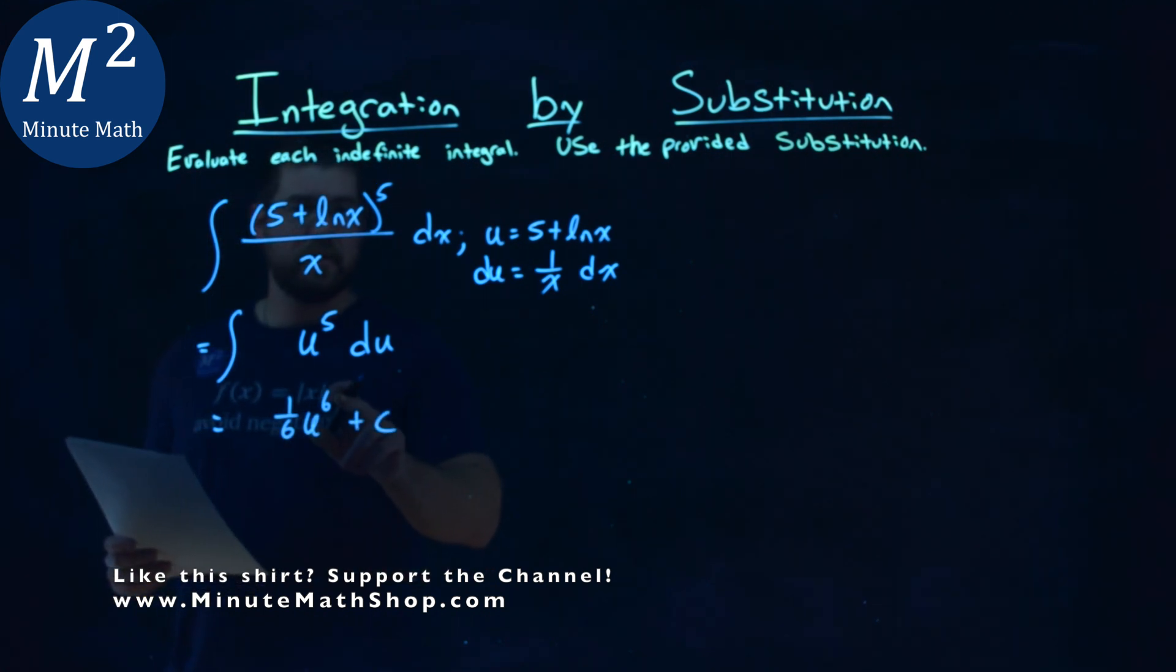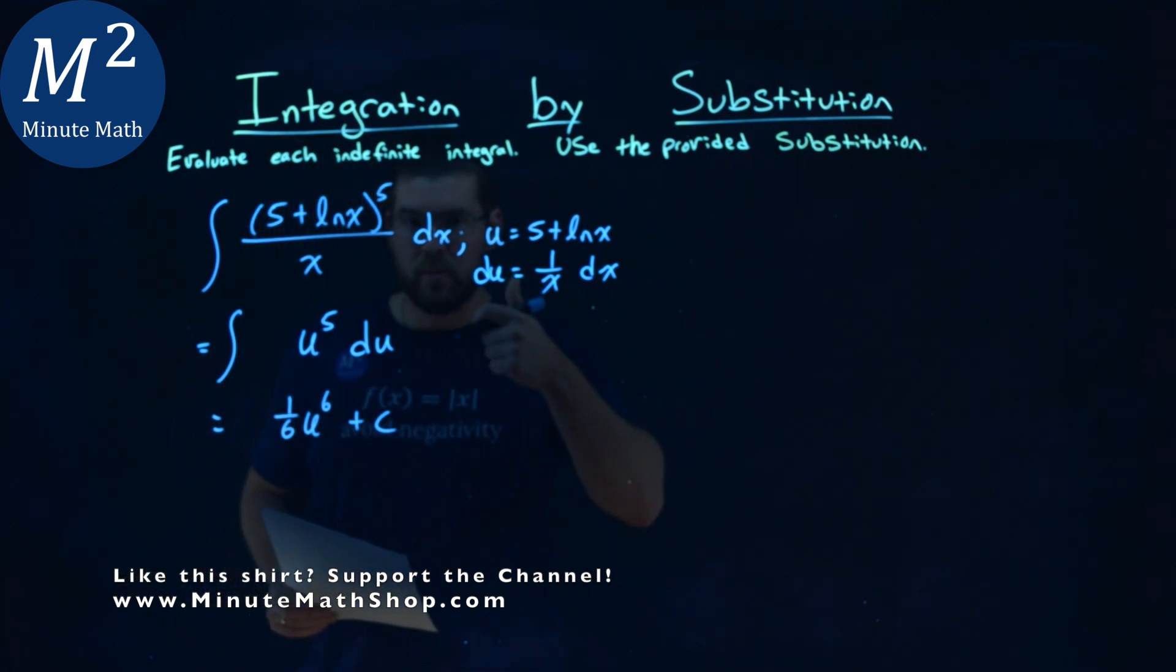Again, to double check, take the derivative: six comes down, times 1/6 is one. Subtract the exponent by one, we get the fifth power. We're good.